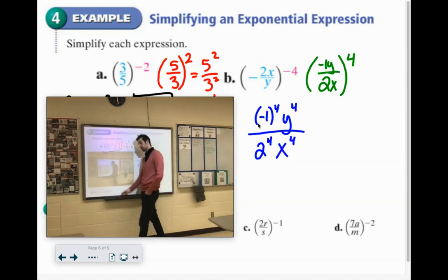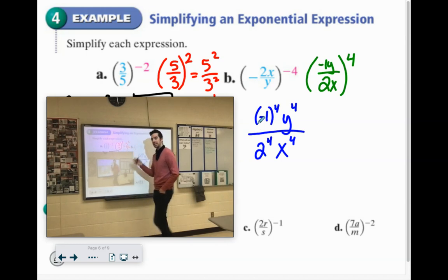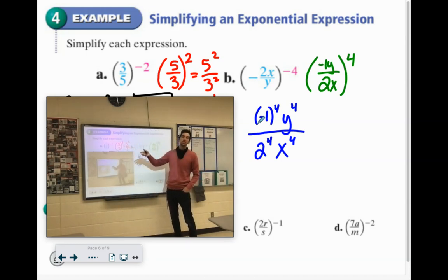So the reason this is tricky is because if you have a negative number, like negative 1 raised to an even exponent, all the negatives would cancel out. So it's actually going to turn this into positive 1, which you don't even need to write positive 1.